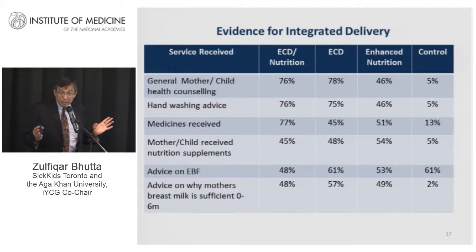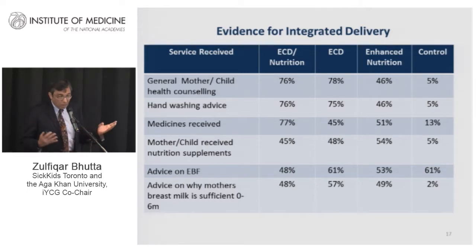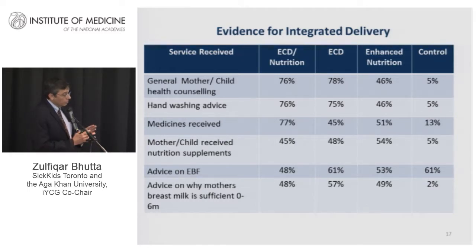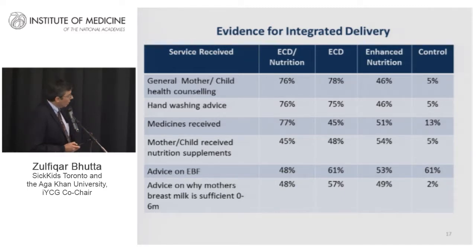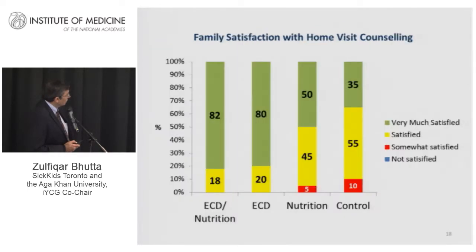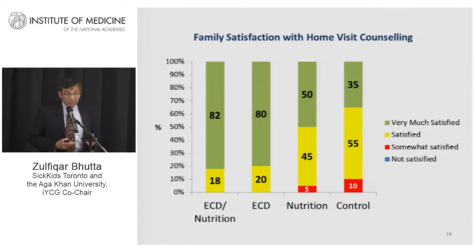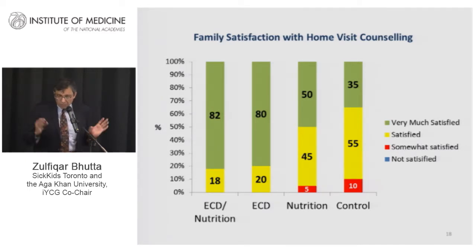There was evidence of integrated delivery. Looking at process indicators — receipt of commodities, mothers counseled on breastfeeding and complementary feeding — the nutrition intervention group did well, and the ECD group did comparably. All were much better than control clusters. From qualitative data, families really liked the interaction with lady health workers, both in group and one-to-one contact, with high satisfaction ratings throughout the study.